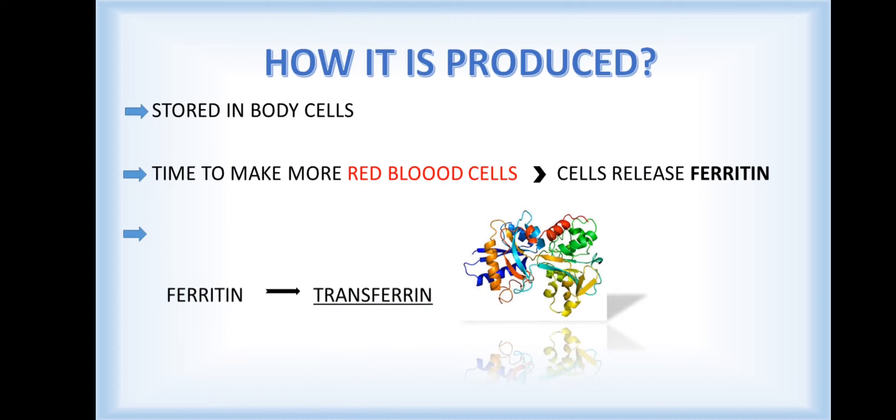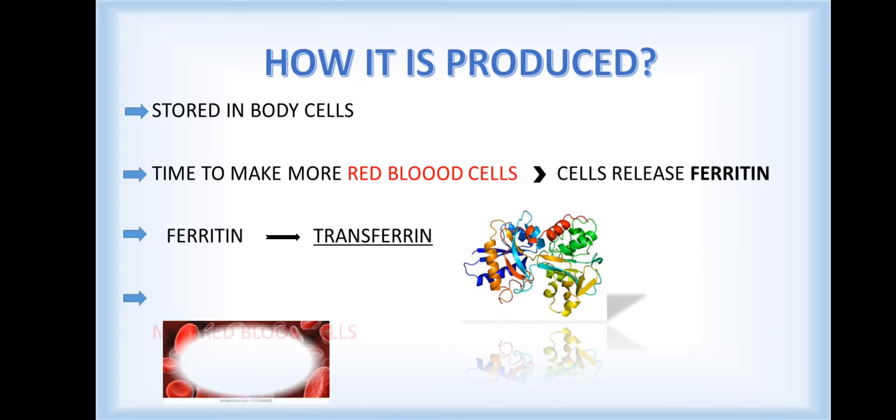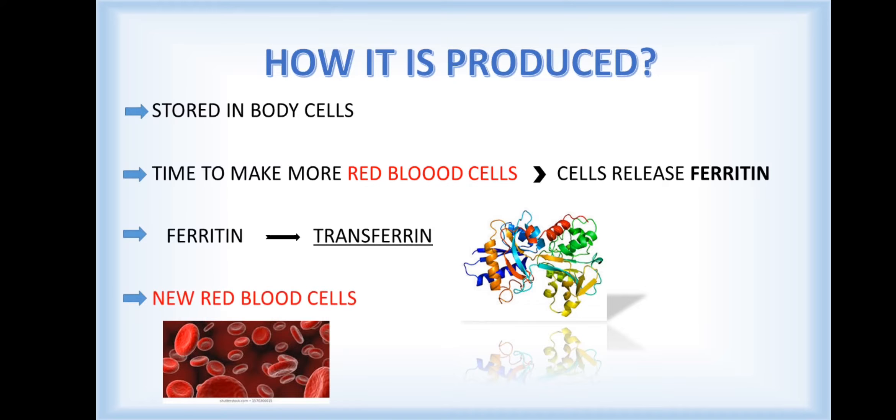The ferritin then binds to another substance called transferrin, which is a protein that combines with ferritin to transfer it when new red blood cells are made.